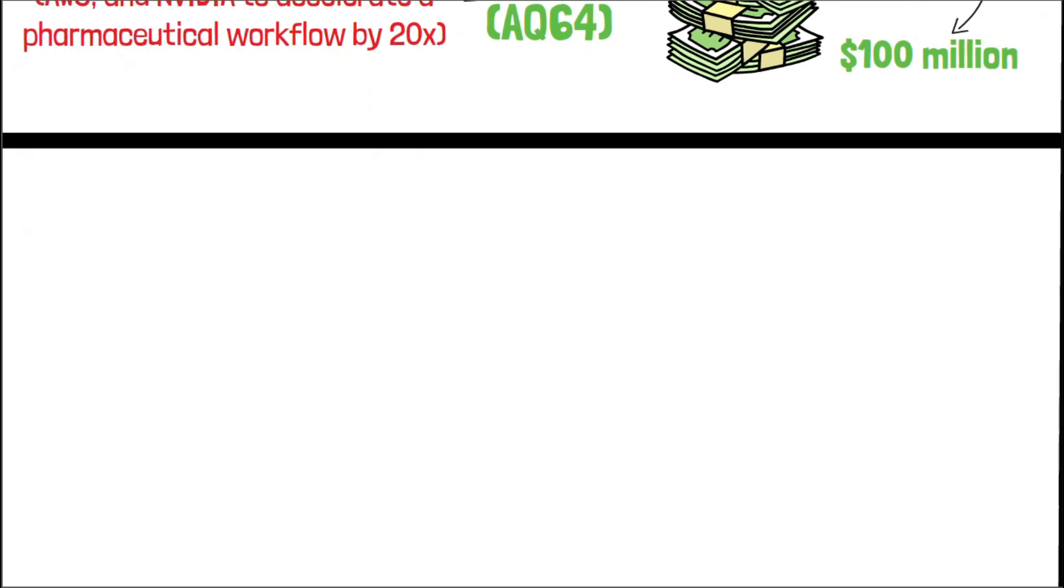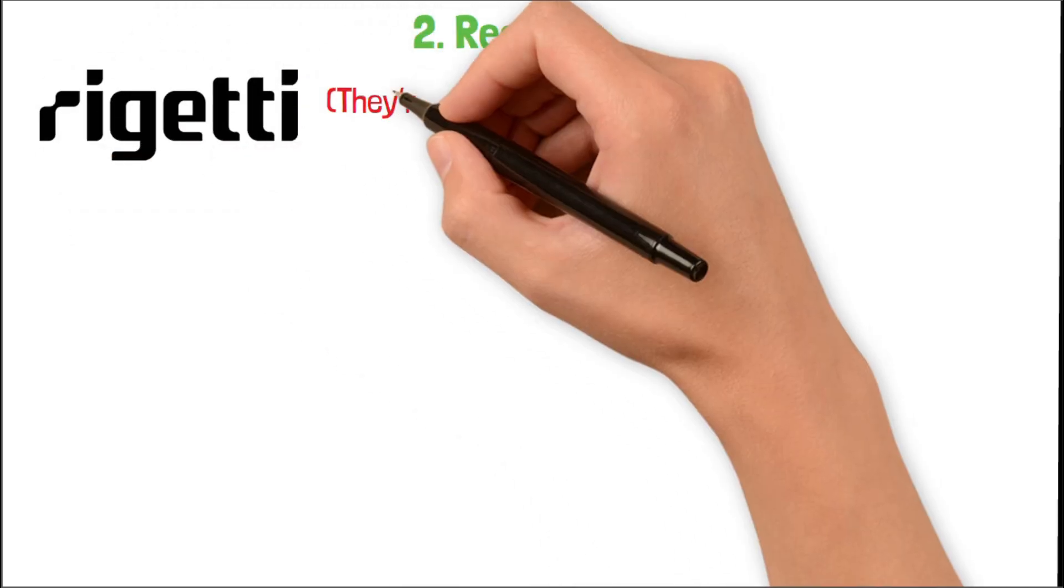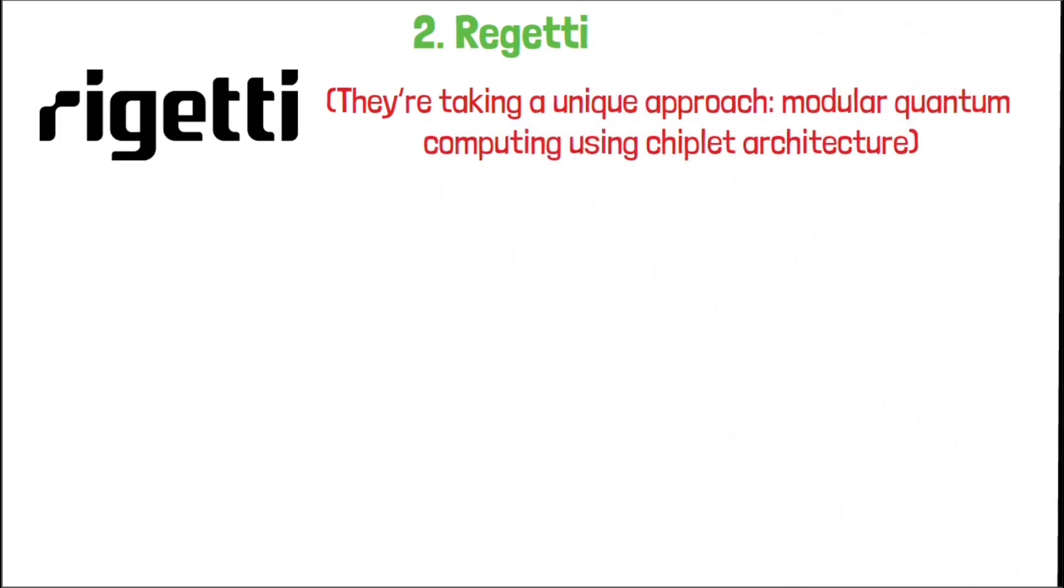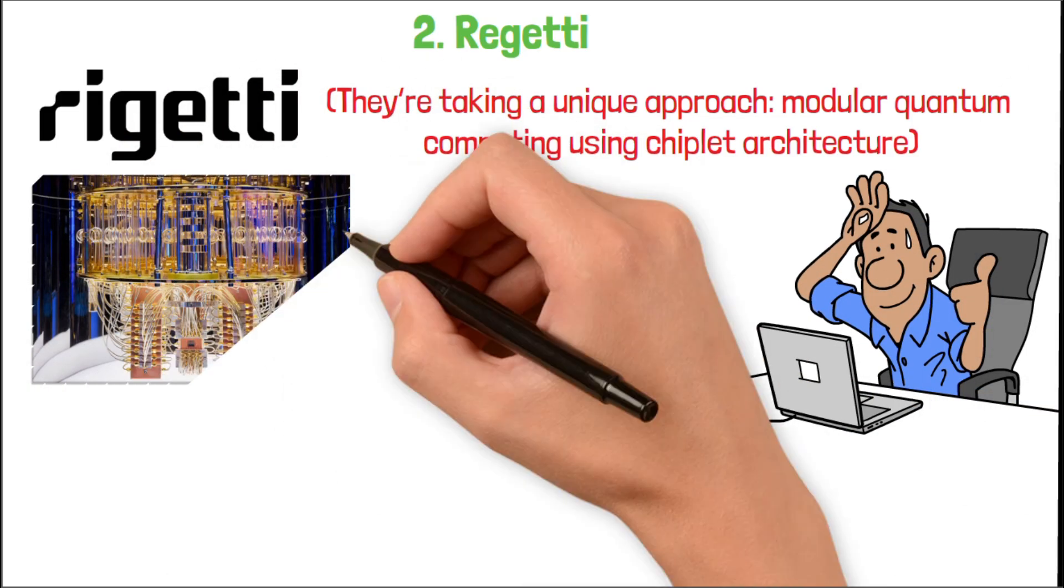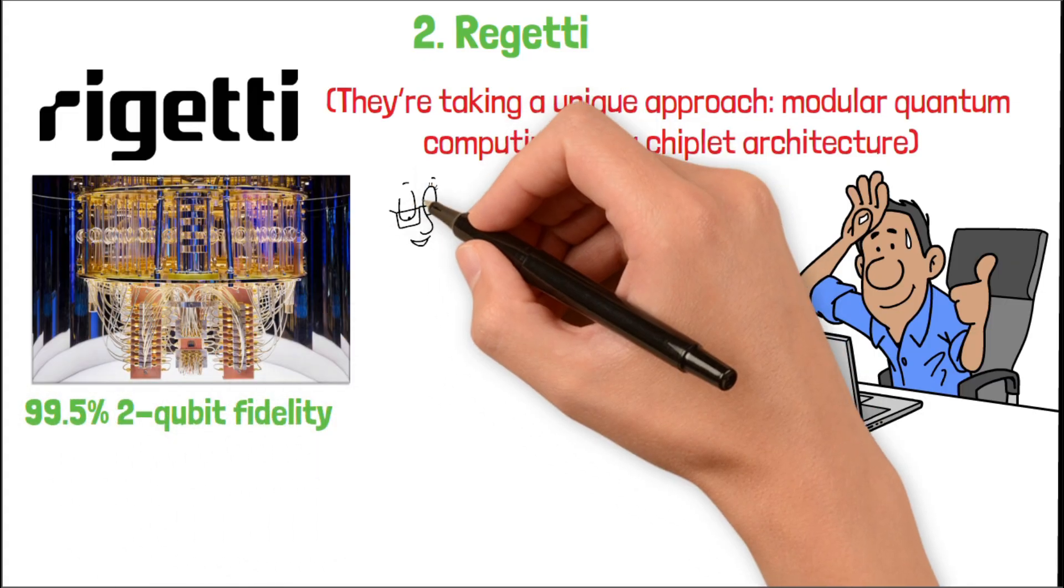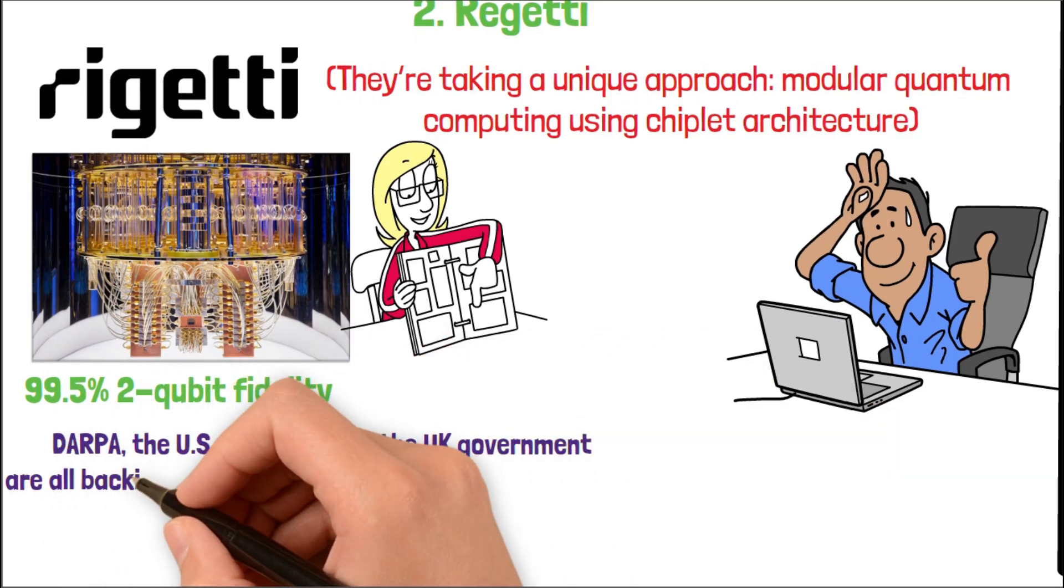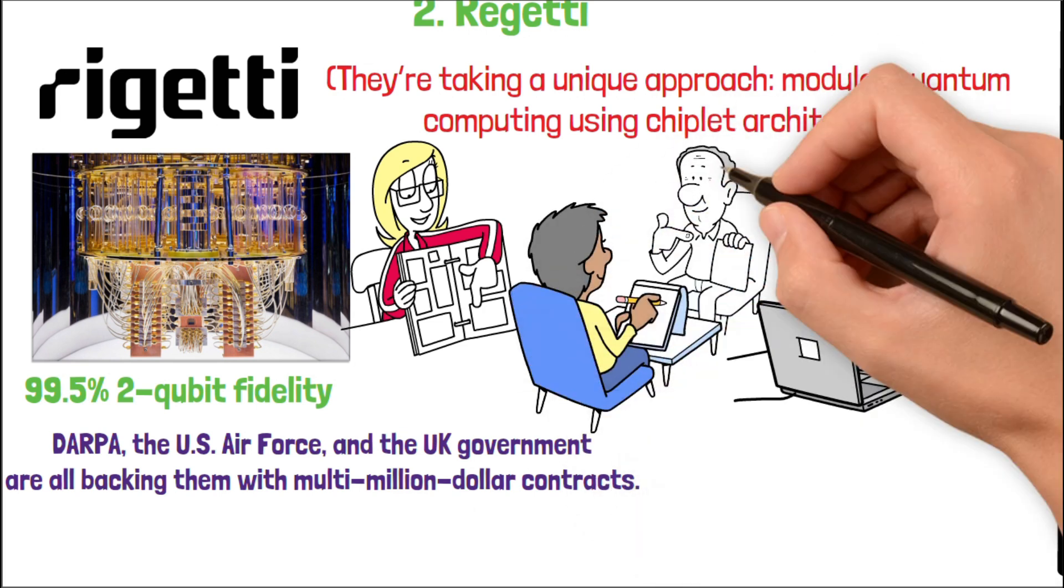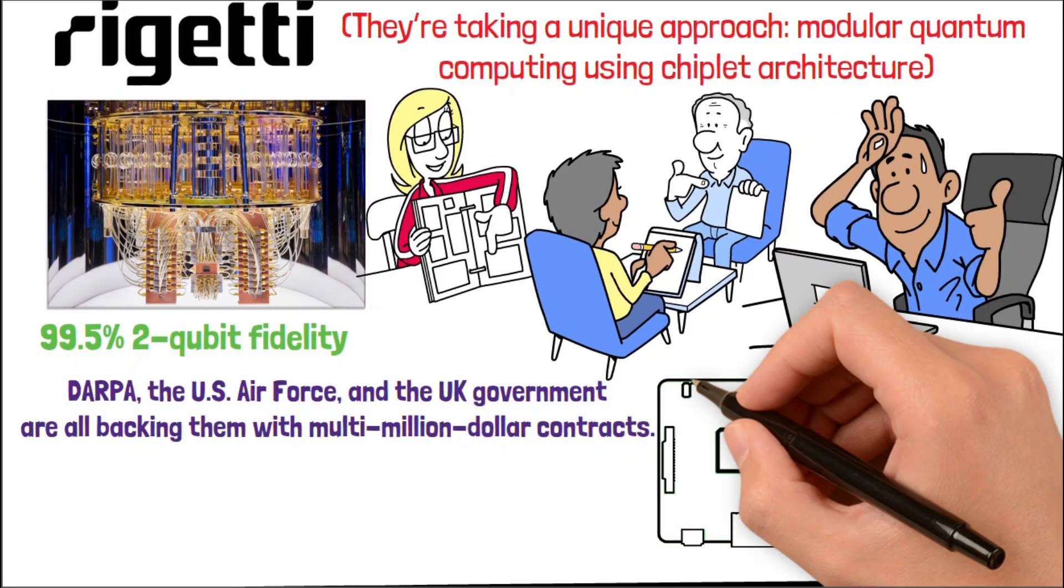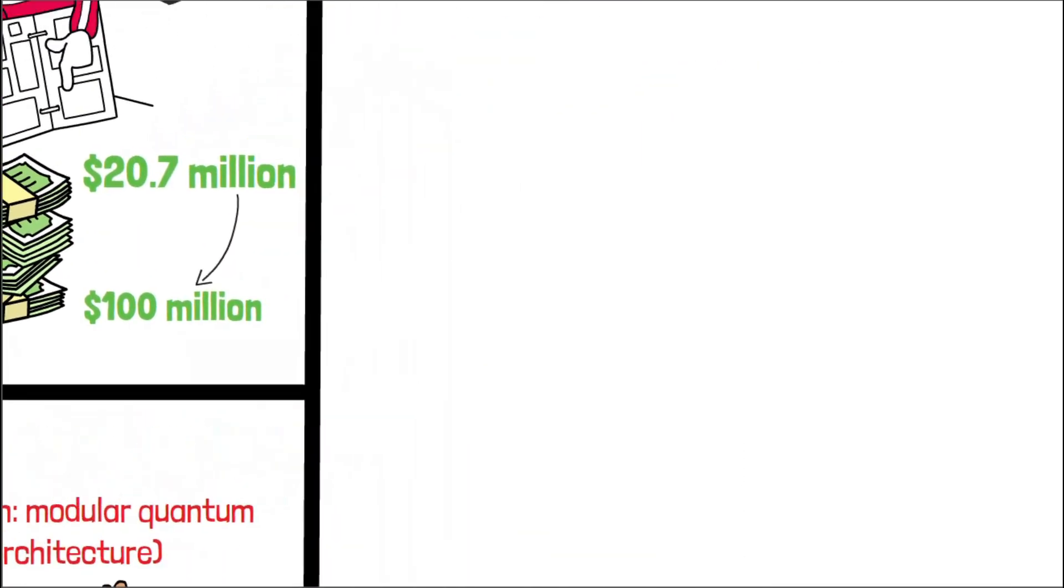Then there's Rigetti, a comeback story with some serious government firepower behind them. They're taking a unique approach, modular quantum computing using chiplet architecture. Instead of scaling up one massive processor, they stitch smaller ones together, a more flexible and scalable design. Their latest Anka 3 system reached 99.5% two-qubit fidelity, a critical benchmark for error correction. DARPA, the U.S. Air Force, and the U.K. government are all backing them with multi-million dollar contracts. Why? Because Rigetti isn't just building tech. They own FabOne, their in-house chip fab. That gives them full-stack control, from design to deployment. If their chiplet model works, they could become the quantum platform others build on.